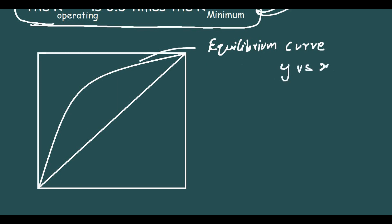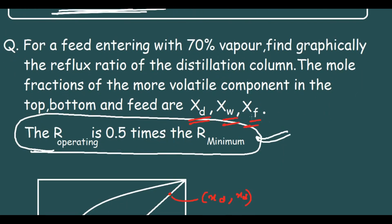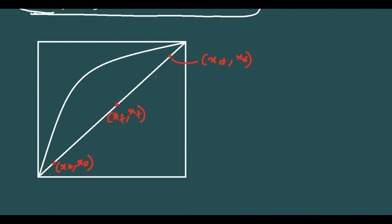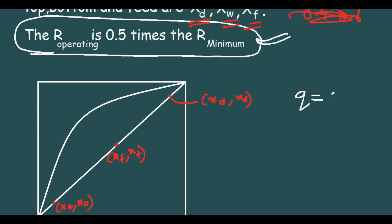The equilibrium curve data — a y versus x table — will be provided; you just plot it. Next we plot the three points: XW (bottom), XF (feed), and XD (distillate) on the diagonal. These values such as 0.4, 0.6 will be given as numbers in the exam. Then we construct the feed line. It is given that the feed is entering with 70% vapor.